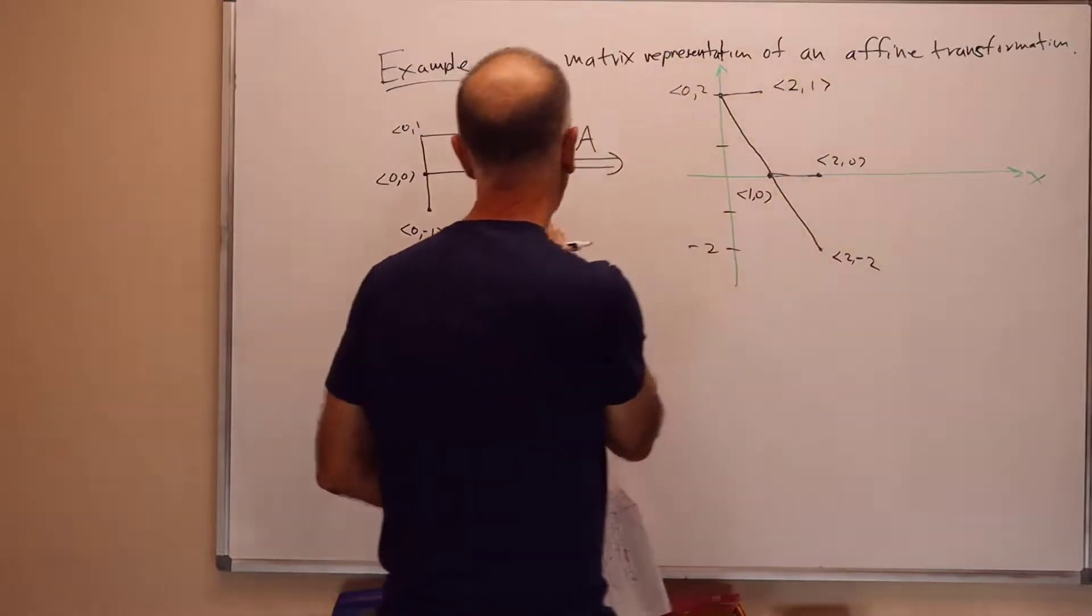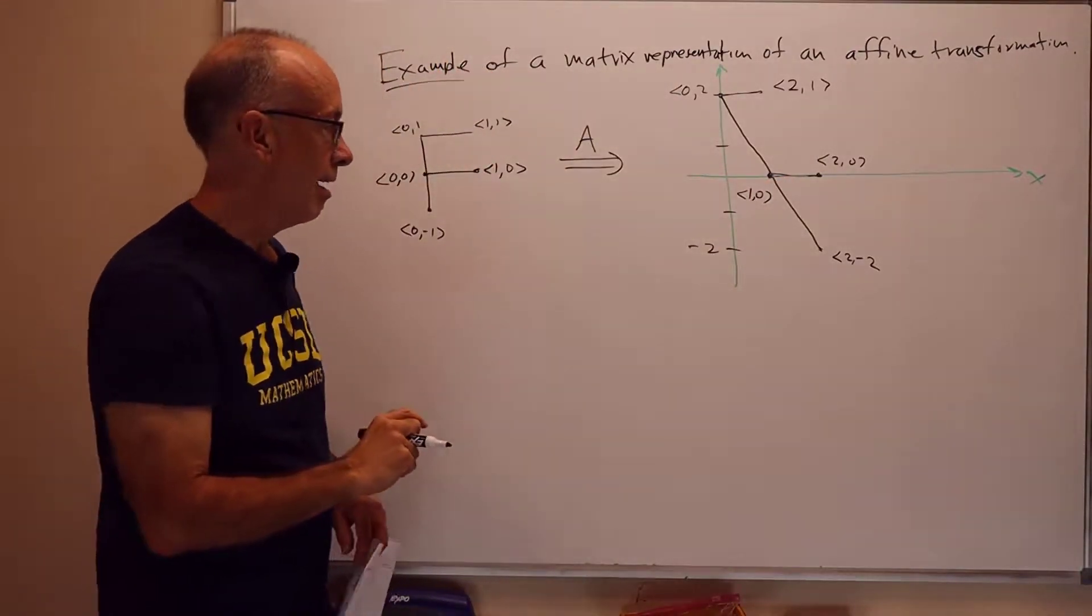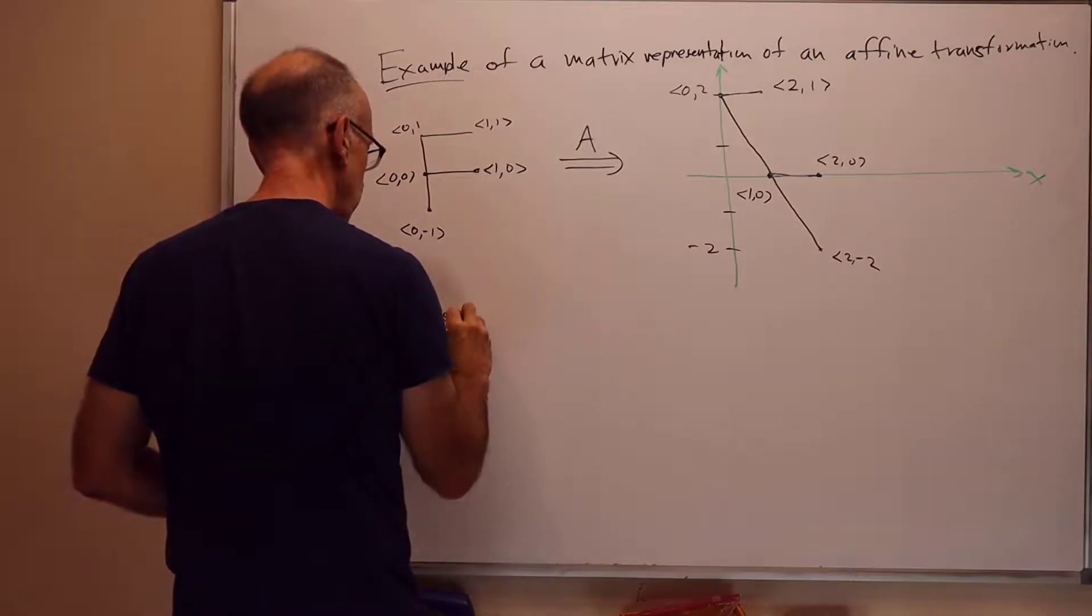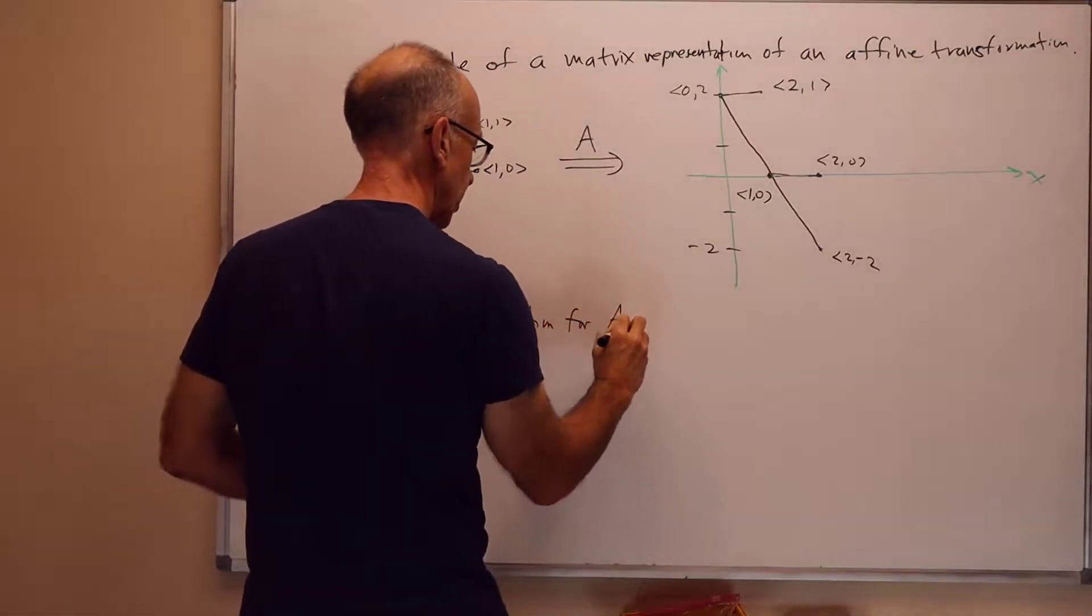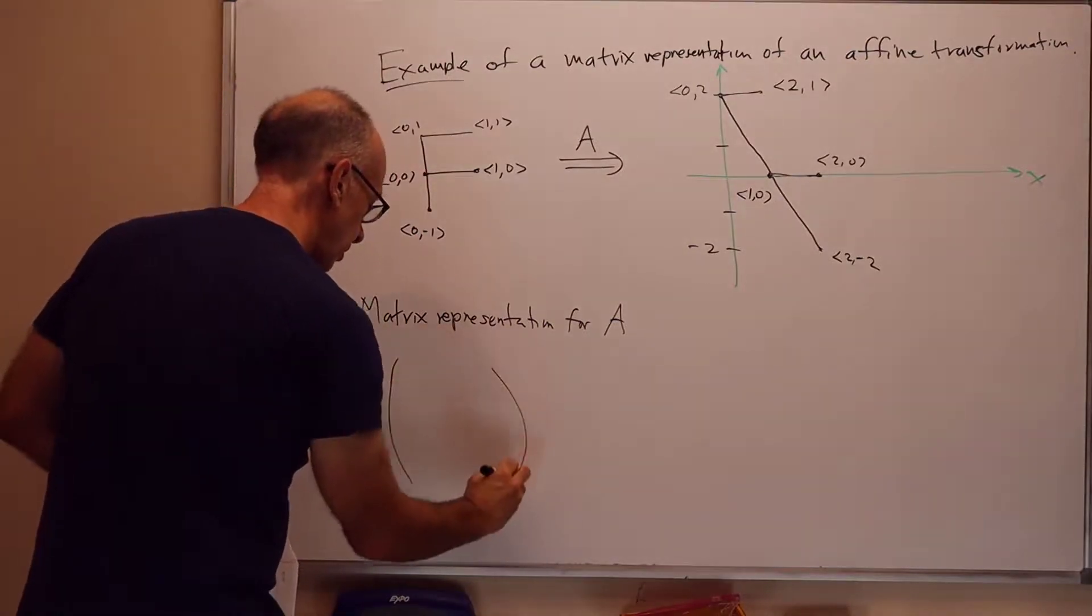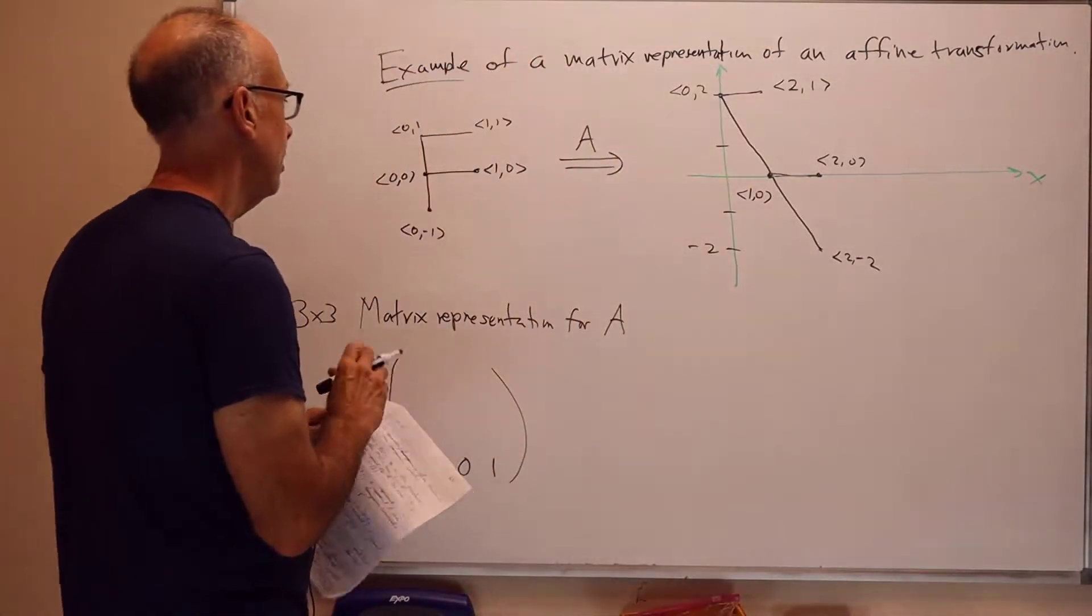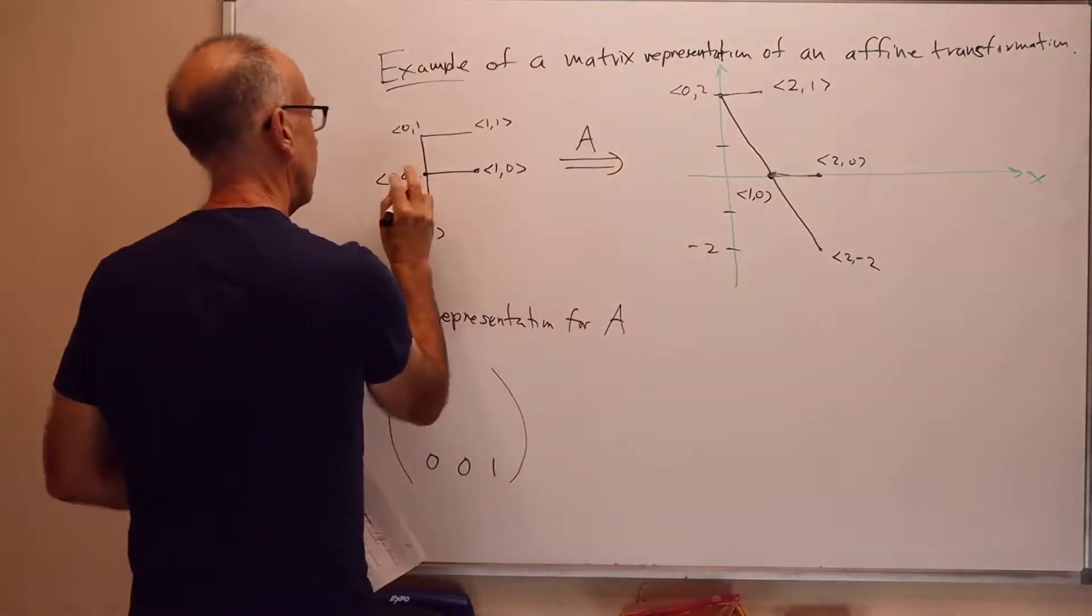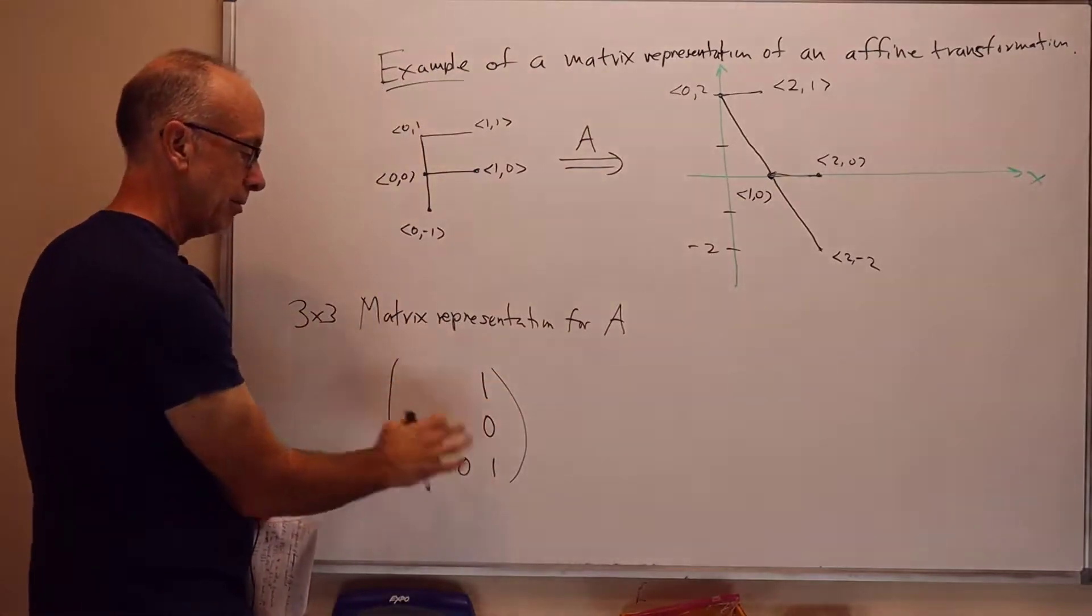So the F here in standard position has been mapped to this slanted and translated F. So the matrix representation for A. And this is a 3x3 matrix representation. How do we form it? So remember, the bottom row is going to be 0, 0, 1. And then we look at the images. Well, let's start off, let's look at the translation part first. The translation part, 0, 0, mapped to 1, 0. So the third column has 1, 0 and then a 1.